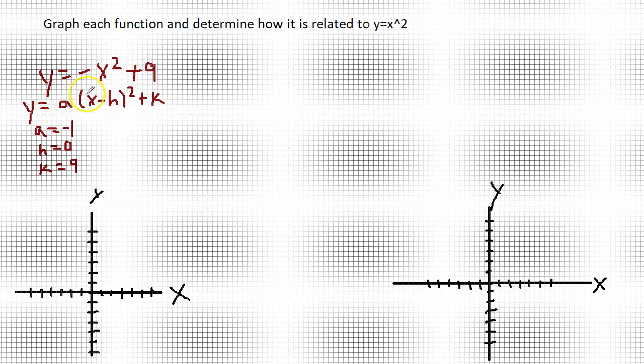Well, our a means we have a reflection in the x-axis, so it makes it open down. So reflection in x-axis.